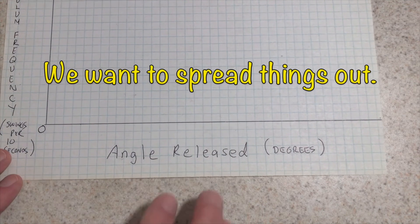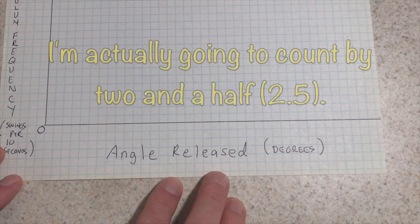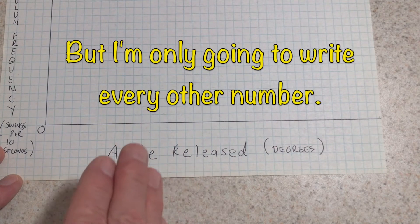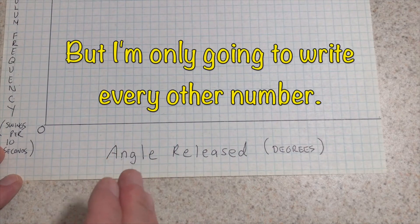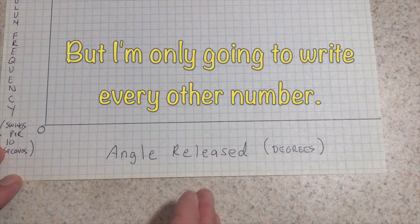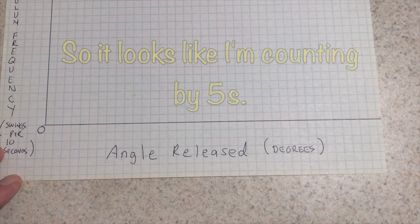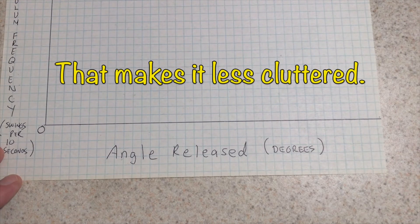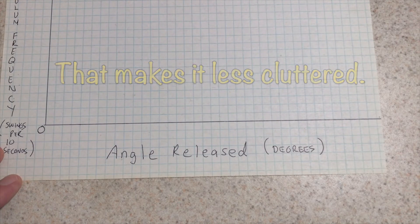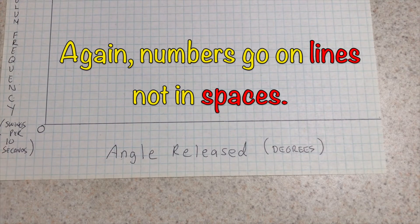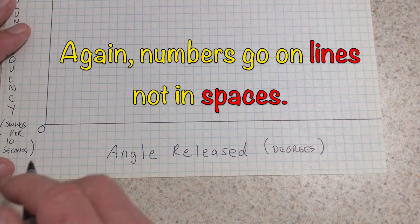We want to spread things out. I'm actually going to count by two-and-a-halves, but I'm only going to write every other number. It looks like I'm counting by fives, but notice I'm going to skip a line. That makes it less cluttered. Numbers go on lines, not on spaces.